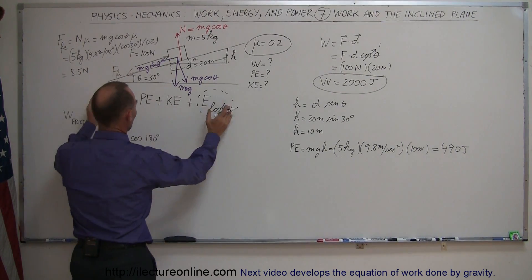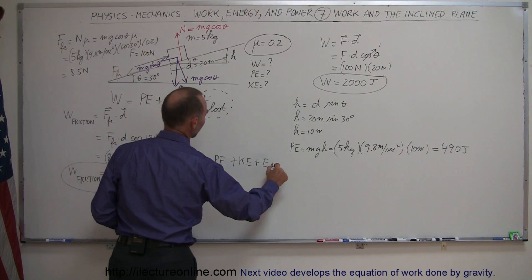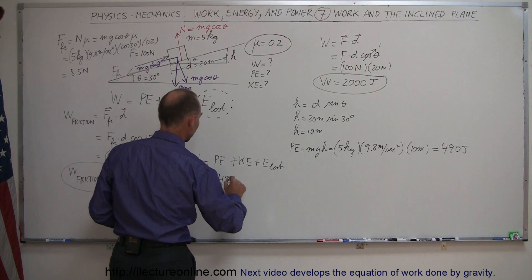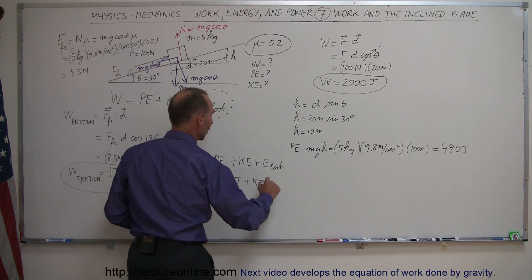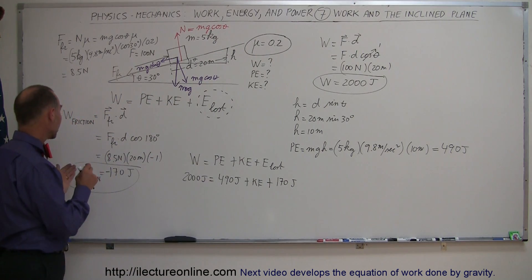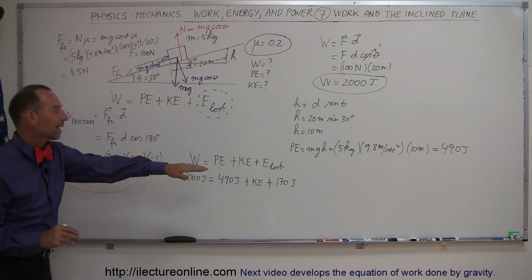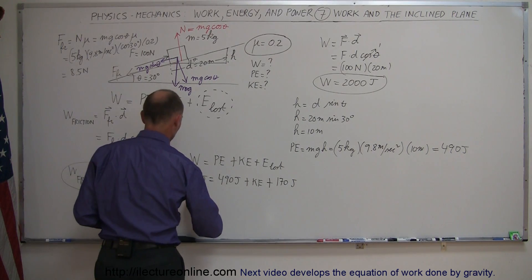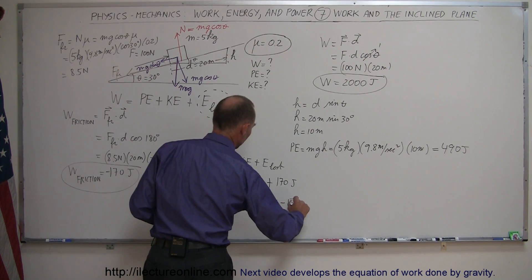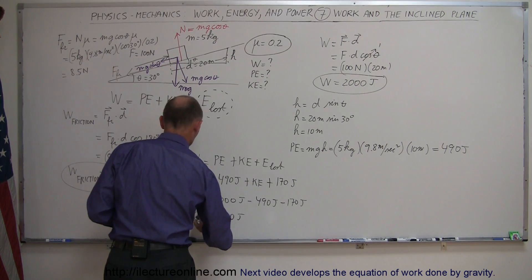Applying the energy equation: Work done = potential energy + kinetic energy + energy lost. So 2,000 J = 490 J + KE + 170 J. The minus sign on the friction work means it gets subtracted from the left side, or equivalently added to the right side. Solving: KE = 2,000 − 490 − 170 = 1,340 joules of kinetic energy given to the system.